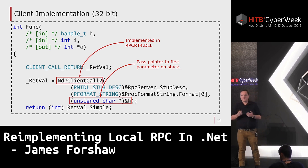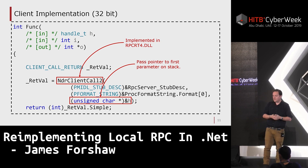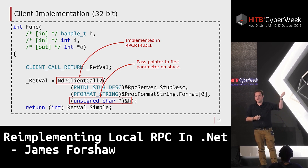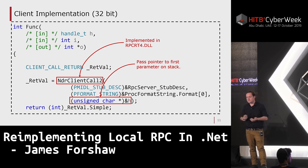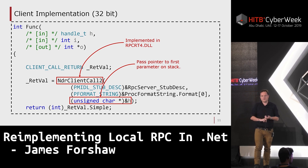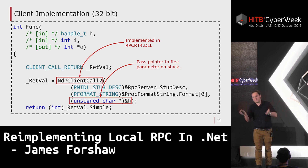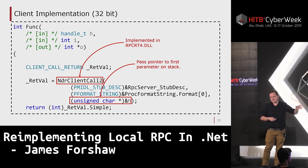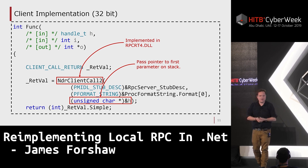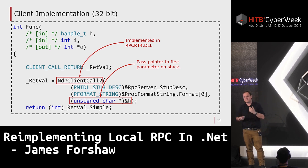The client is generated at the same time by the MIDL compiler. It generates a C file with function definitions, and all it does is call NDR_CLIENT_CALL2 — a function in the RPC runtime — passing the format string setup and a pointer to the first value on the stack. Everything works using native memory addresses, pulling things off the stack and manipulating them. This makes it more difficult to implement in a managed language, because you'd have to simulate stack frames and ensure everything is properly aligned so the RPC runtime can do correct marshalling.